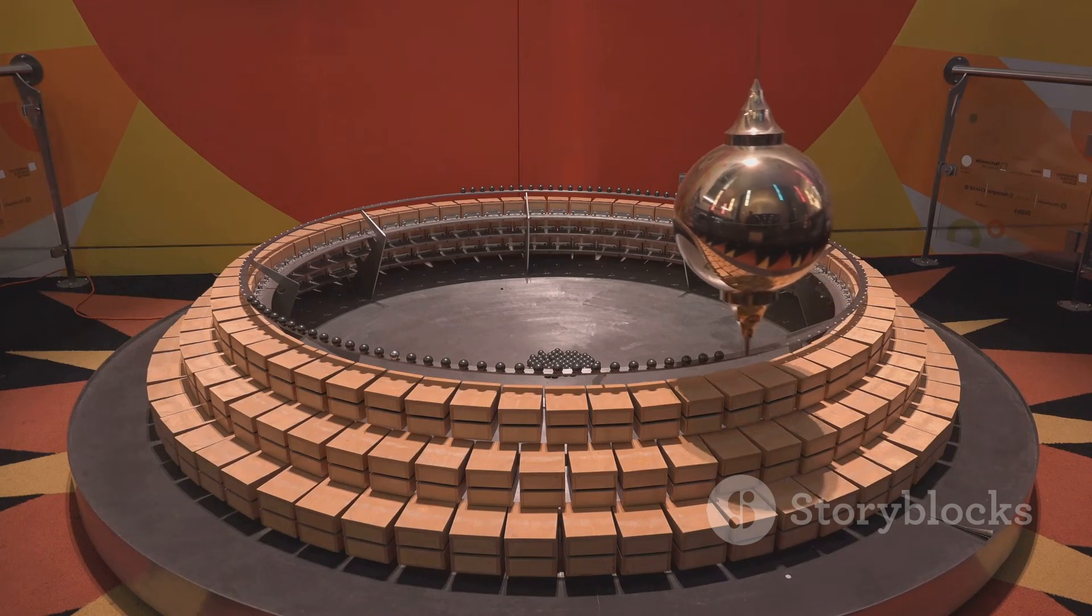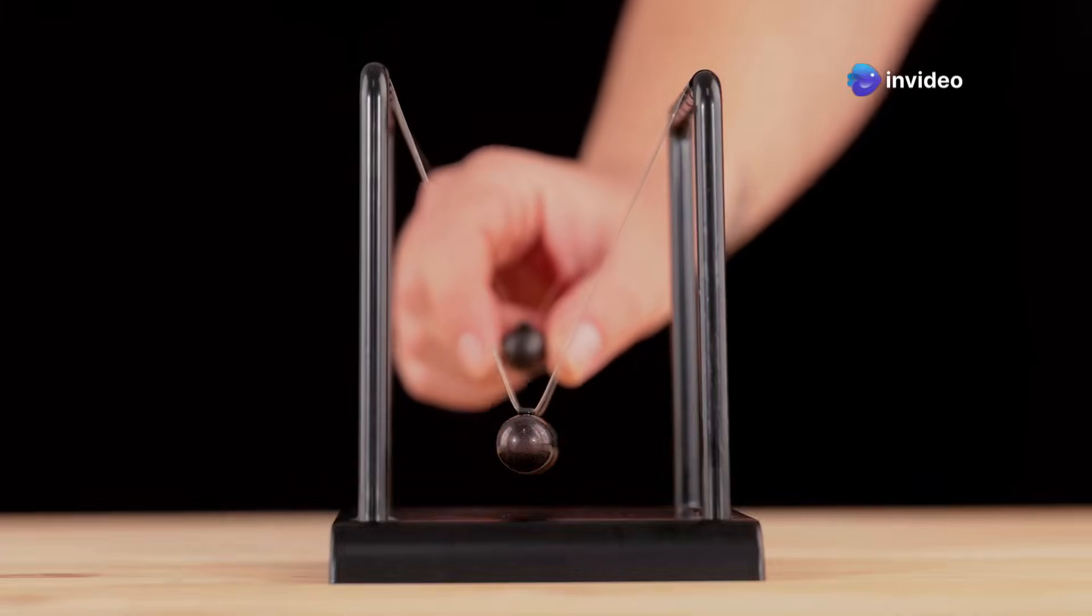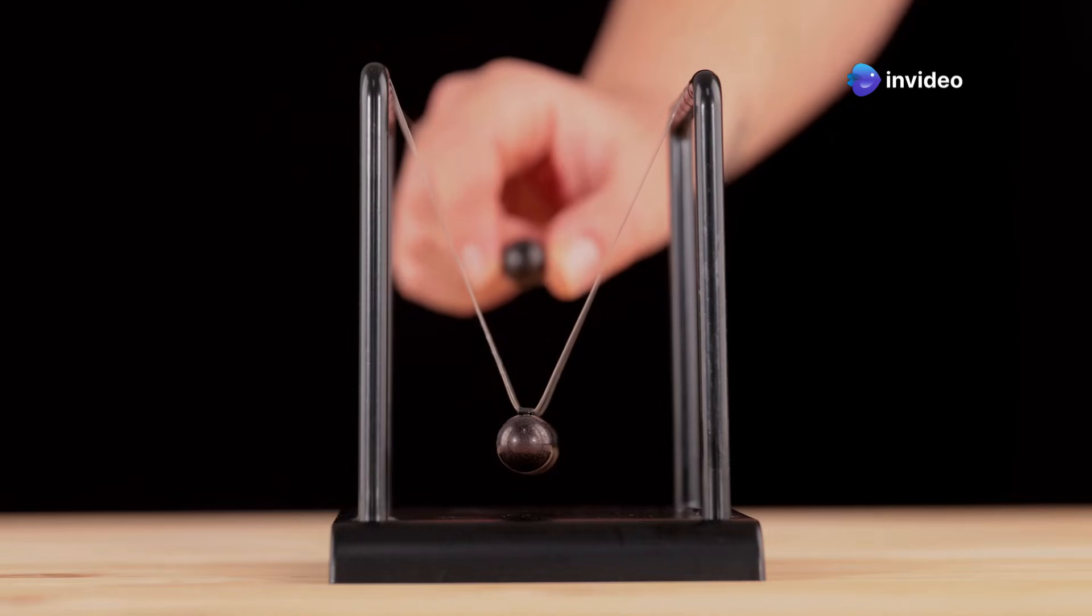Imagine a pendulum swinging back and forth. Each time the pendulum reaches its highest point, we give it a tiny nudge, preventing it from swinging to the other side. This constant nudging, analogous to frequent observation in the quantum world, effectively freezes the pendulum's motion.